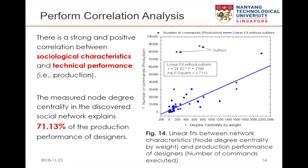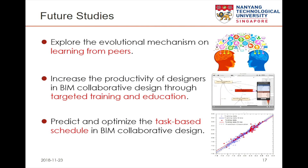This result is confirmed through our empirical study. For future work, there is still a long way to go. Our group is the first to study BIM log data. One specific area is exploring the evolutionary mechanism of the learning process from peers — for example, whether you learn faster in a large group or a small group, and whether you learn faster collaborating with senior or junior people. We will also try to simulate design behaviors and do some prediction and optimization for future study.